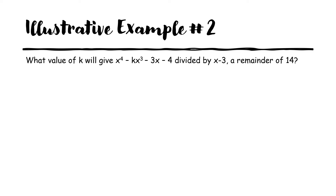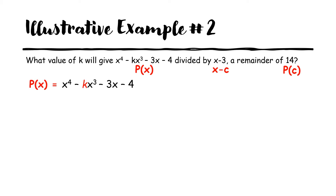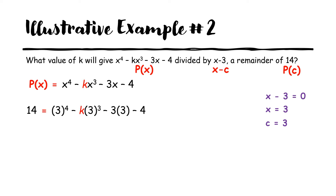For another example: what value of k will give x⁴ minus kx³ minus 3x minus 4 divided by x minus 3 a remainder of 14? Since we have a remainder of 14, we use the remainder theorem. We identify p(x), x minus c, and the remainder which is p(c). So p(x) equals x⁴ minus kx³ minus 3x minus 4. Equating x minus 3 to 0 gives c equals 3, so we replace all x variables with 3, and p(c) equals 14.